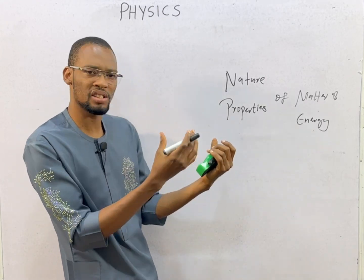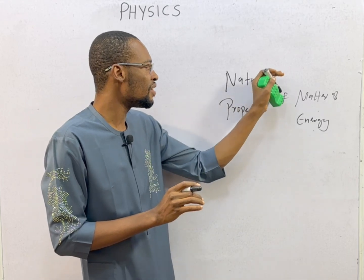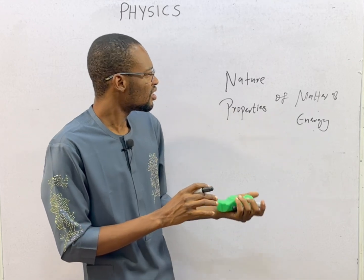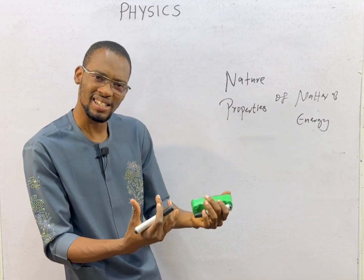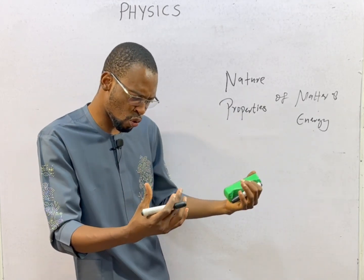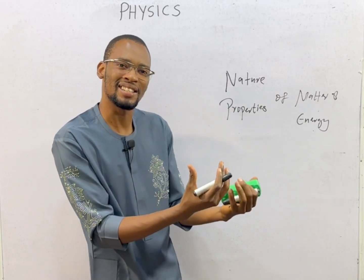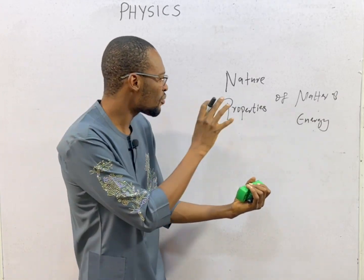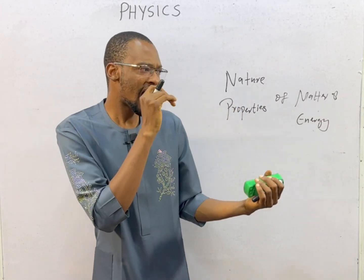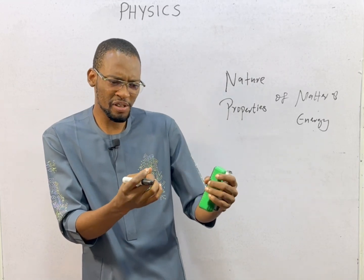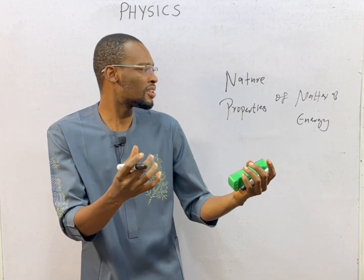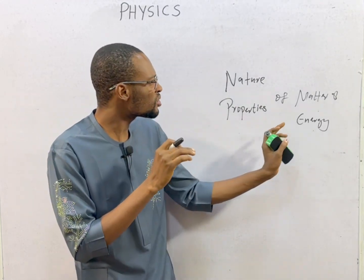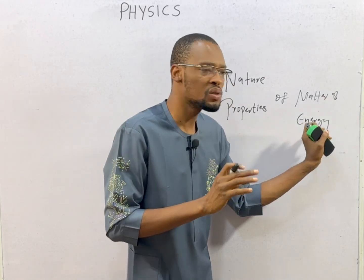On the board we have about four major keywords: nature, properties, matter, and energy. Nature means what is matter like, what form does matter take, how does this matter appear and behave? And properties simply mean what are the various features of matter, what are the characteristics of matter? We are not just dealing with matter when it comes to physics, we are also dealing with energy.